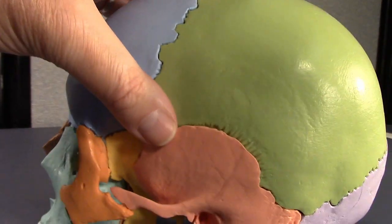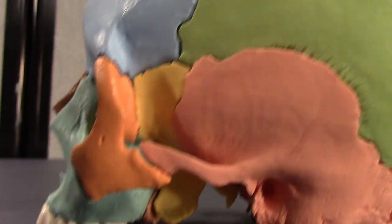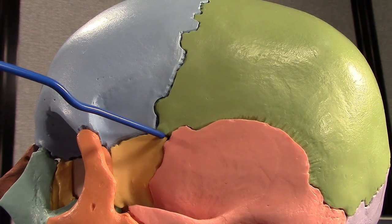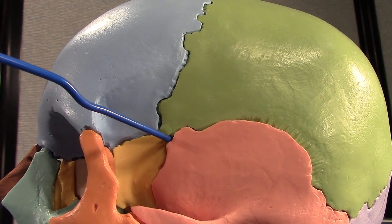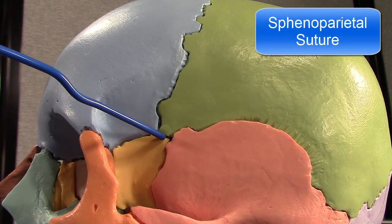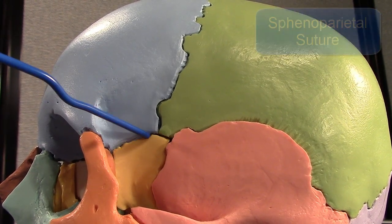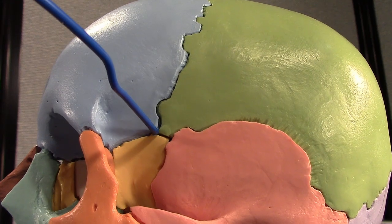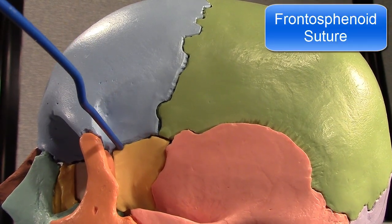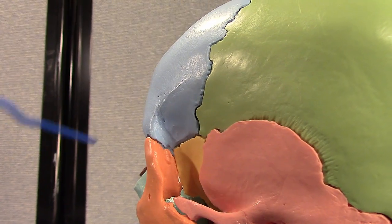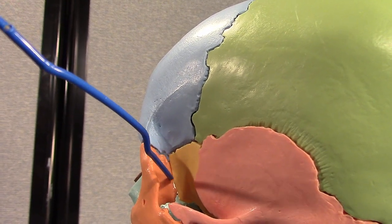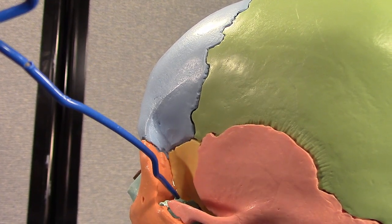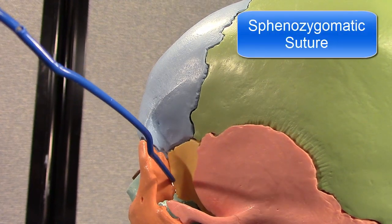Let's go back to the side of the skull. What's the suture here? That's the sphenoparietal suture. What's this suture? The frontosphenoid suture. And what's this suture here? That's the sphenozygomatic suture.